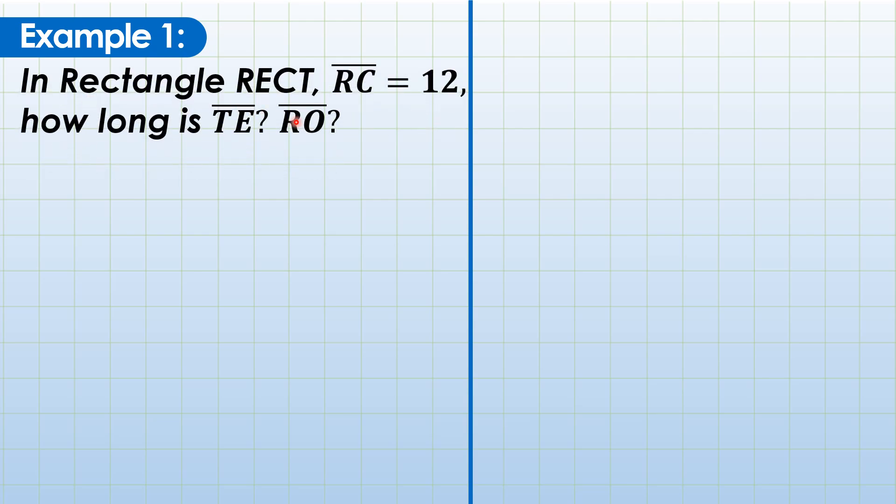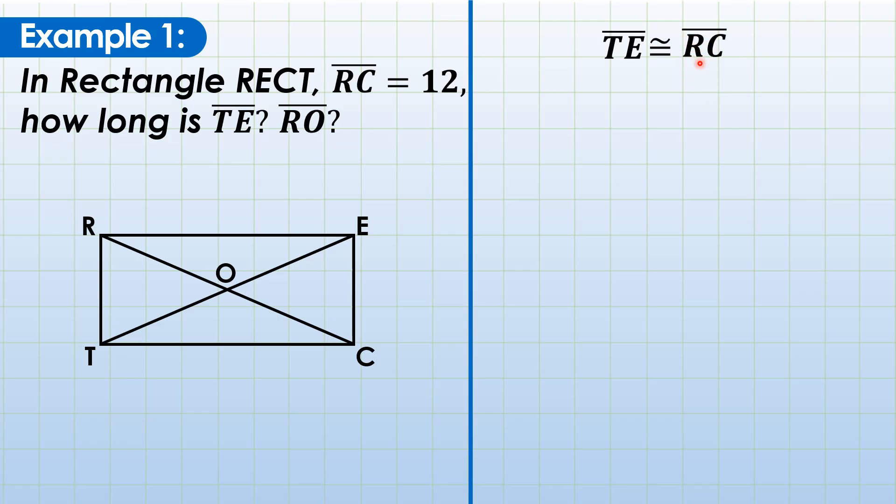Example 1: In rectangle RECT, RC = 12, how long is TE? RO? RC is a diagonal, and the question asks for TE, which is also a diagonal. What do we know about diagonals of a rectangle? Correct, they are congruent. That's what property number 6 of rectangle says, right? In your solution, write that TE is congruent to another diagonal, RC. Next, substitution: TE equals RC, which becomes 12. And that's it. So mentally, you can solve that easily. As long as they are both diagonals, they have the same measures.